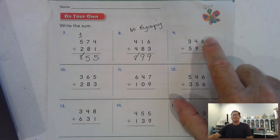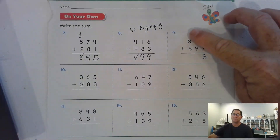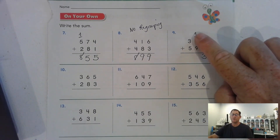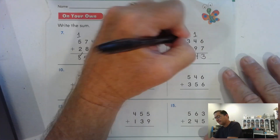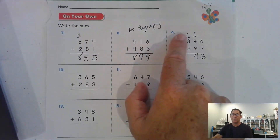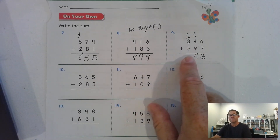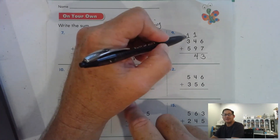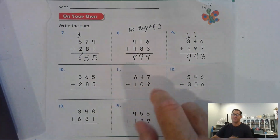Number nine: seven ones and six ones is thirteen ones — we're going to regroup that as one ten and three ones. Nine plus one more is ten, ten plus four is fourteen tens — well, fourteen tens we have to regroup as one hundred and four tens. Fourteen tens is a hundred and forty, so one hundred and four tens here. Hundreds: five hundred, three hundred is eight hundred, plus the regrouped hundred, nine hundred. We don't have to regroup the hundreds.